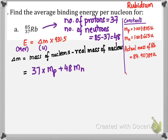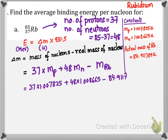To get the mass of nucleons, multiply mp (mass of one proton) by the number of protons, which is 37. Similarly, multiply mn (mass of one neutron) by 48, the number of neutrons. Then subtract the real mass of rubidium. Substituting the provided constants gives a mass defect of 0.793656 u.